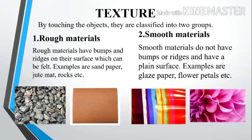Now, the second property, that is texture. By touching the object, they are classified into two groups: number one, rough materials; second, smooth materials. Rough materials have bumps and ridges on the surface which can be felt. For example, sandpaper, jute mat, rocks, etc.